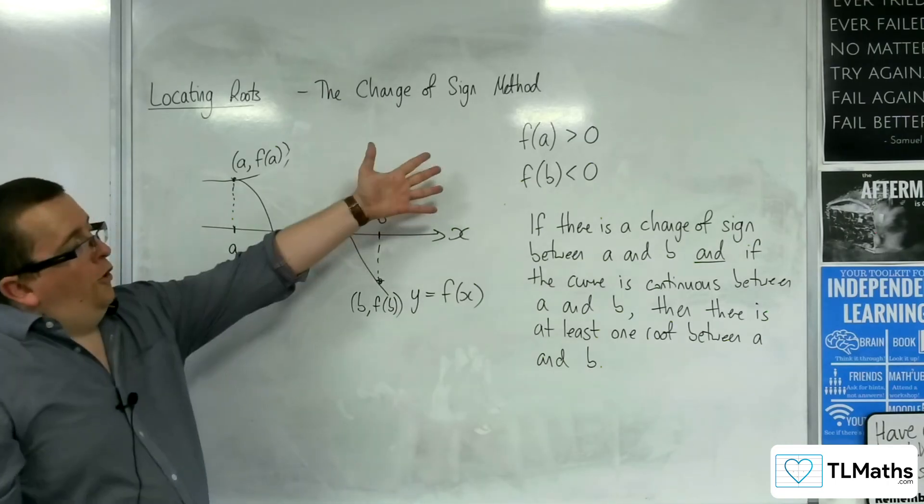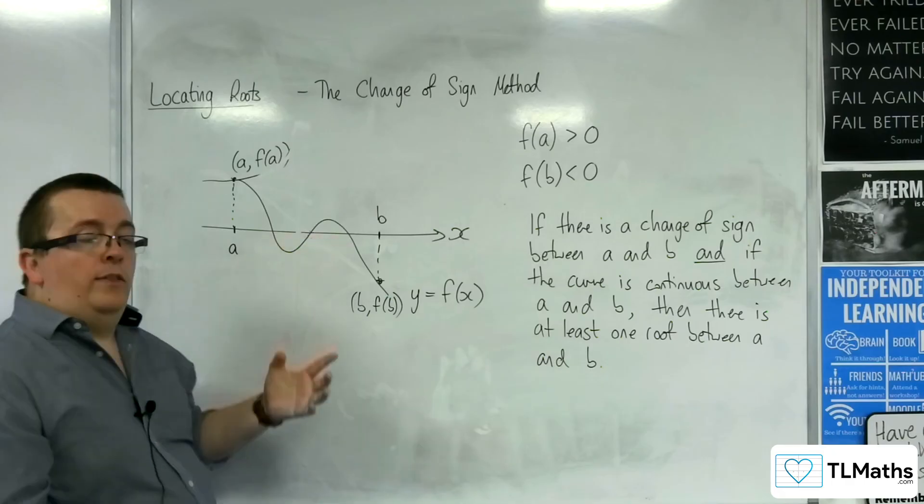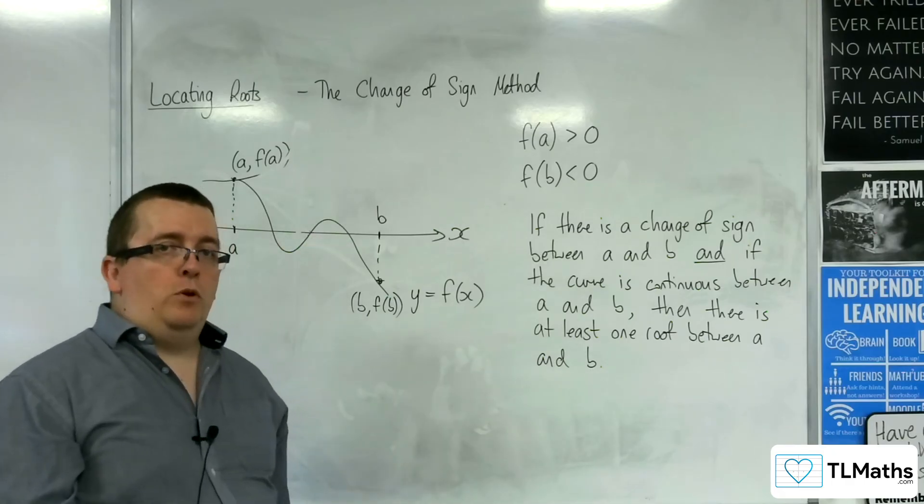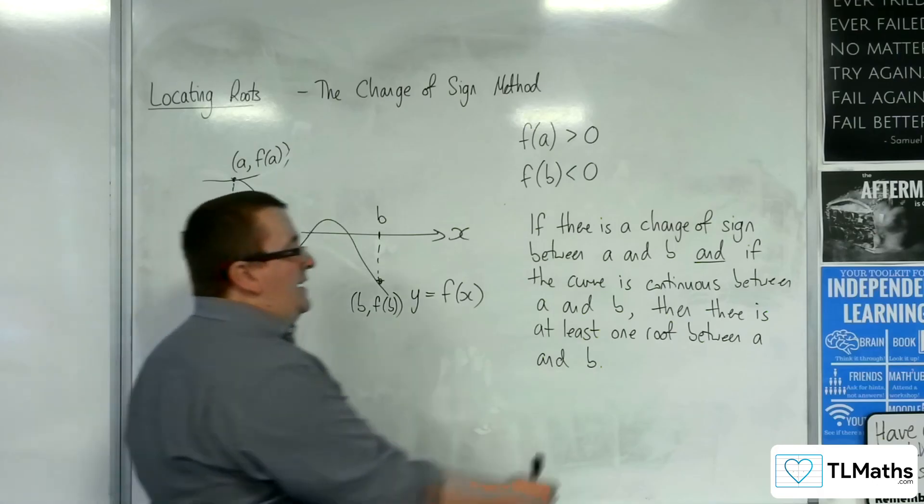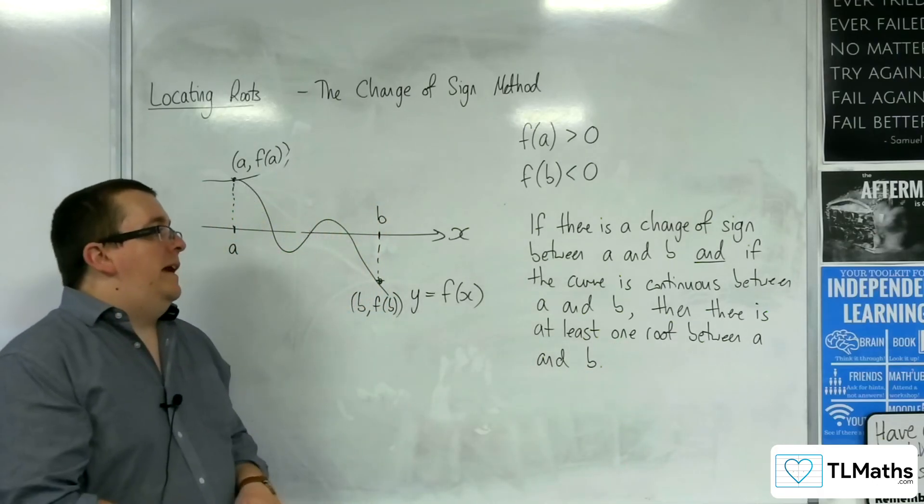I would have the behaviour of the change of sign, the curve is continuous, but actually there are three roots between those two points. So the fact that there has to be this at least one part in it needs to be there as well.